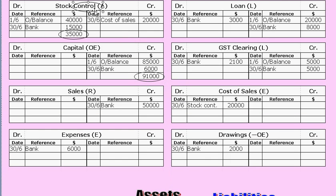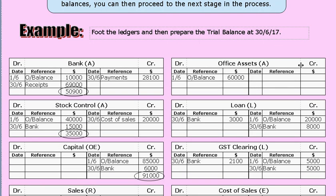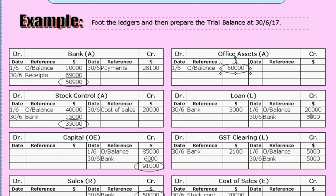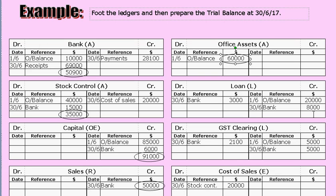If there is only one figure in a ledger account, that is the footed balance — just put a circle around it. For sales, that applies directly. Same thing for expenses: the footed balance is $6,000, so just put a little circle around it. For office assets, it's the same — $60,000. Just circle the $60,000; that is the footed balance for office assets.